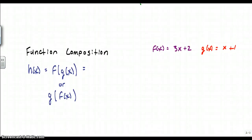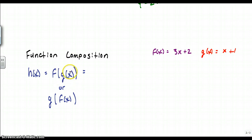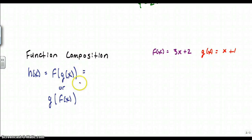The last operation we're going to talk about is function composition. This one is kind of hard to grasp, but it's exactly what it means — you have one function composed of another. This is read f of g of x. Think of each one of these parentheses as an 'of.' You can also do g of f of x. Just like subtraction and division, function composition order matters, and you always work from the inside out.